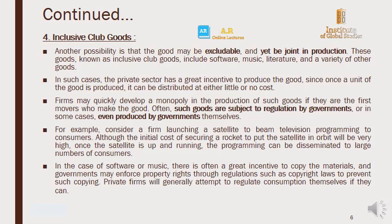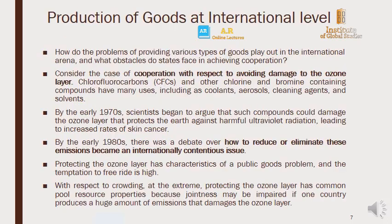Consider a firm launching a satellite to beam television programming to consumers. Although the initial cost of the rocket to put the satellite in orbit is very high, once the satellite is up and running the programming can be disseminated to a large number of consumers. In the case of software or music, there is a great incentive to copy materials, so governments may enforce property rights through regulations such as copyright laws to prevent copying. Private firms will also attempt to regulate consumption themselves — in the case of satellite television, for example, by encoding their signal.